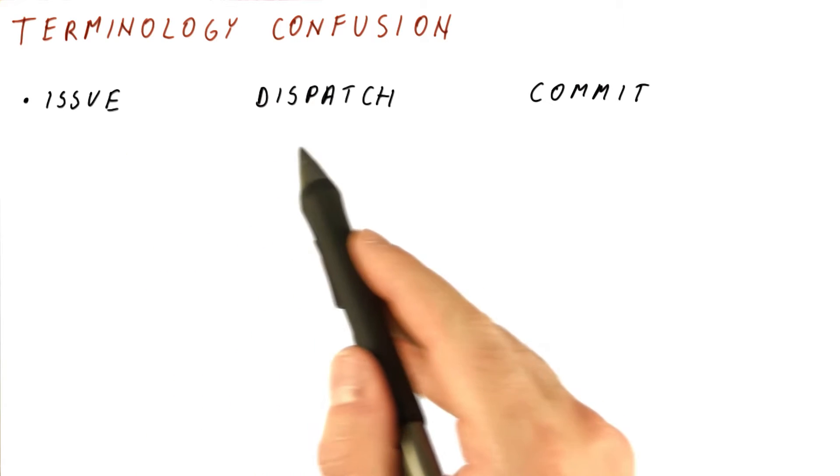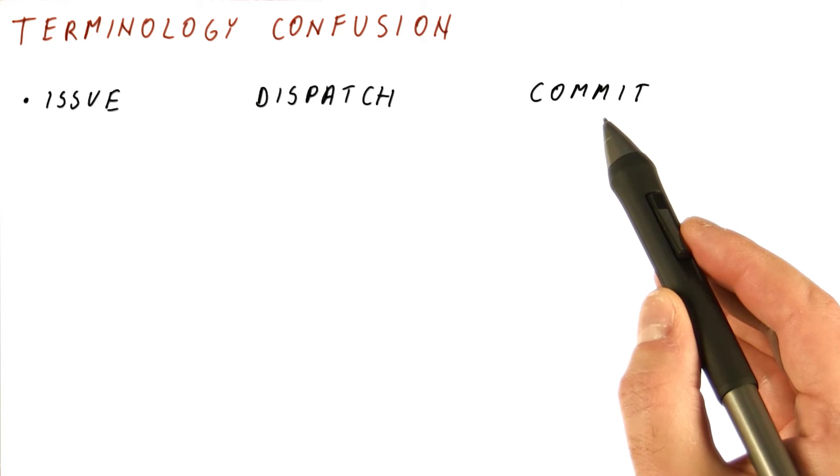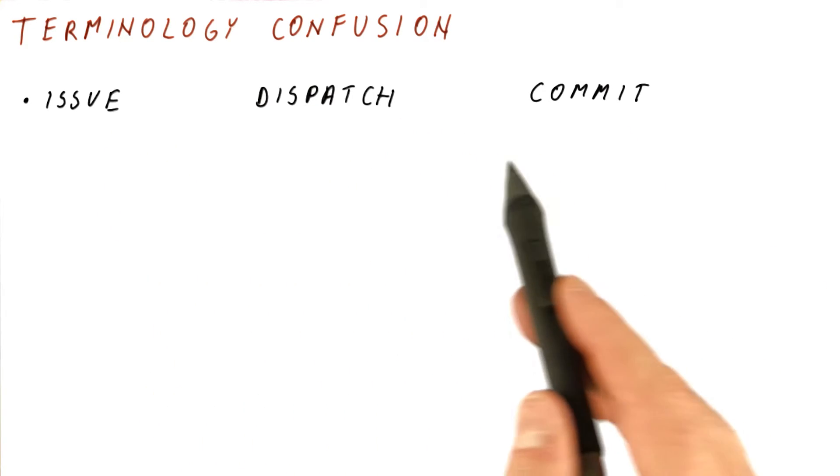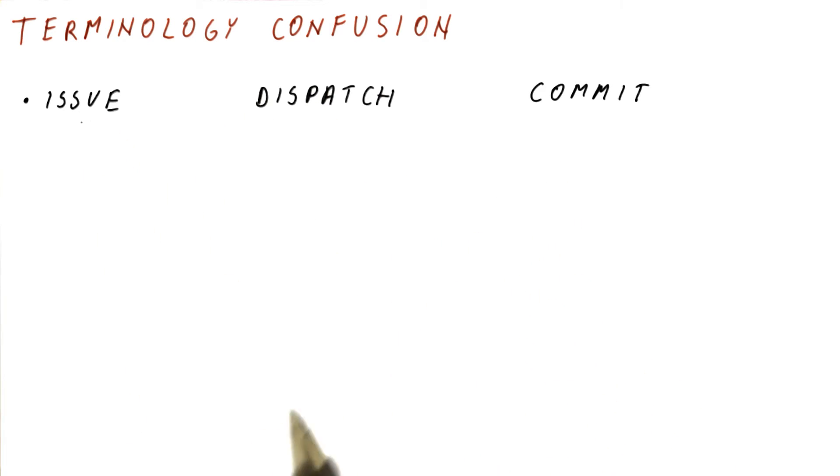This terminology was introduced in the original Tomasulo's algorithm, and then commit was introduced in the first papers that talked about ROBs. So most of the academics are going to use this terminology. Most of the research papers that are written will use something similar to this.